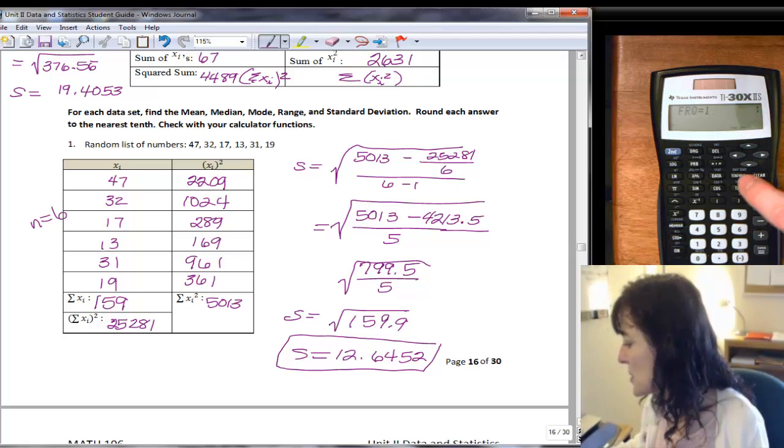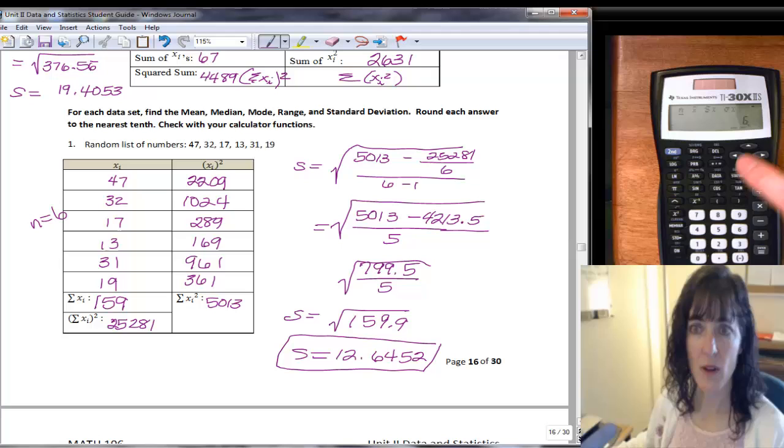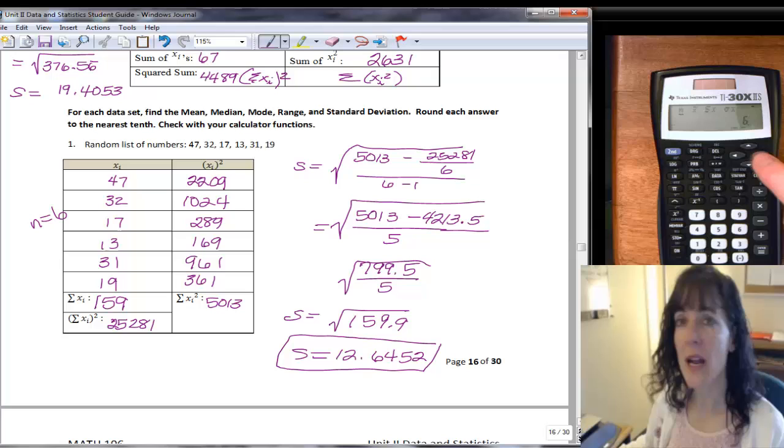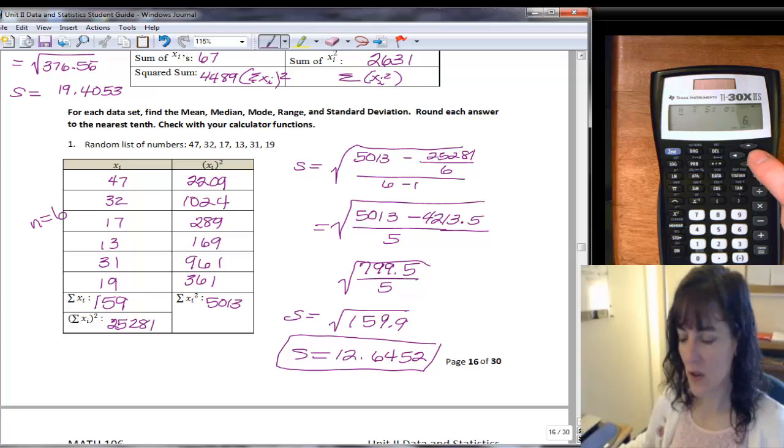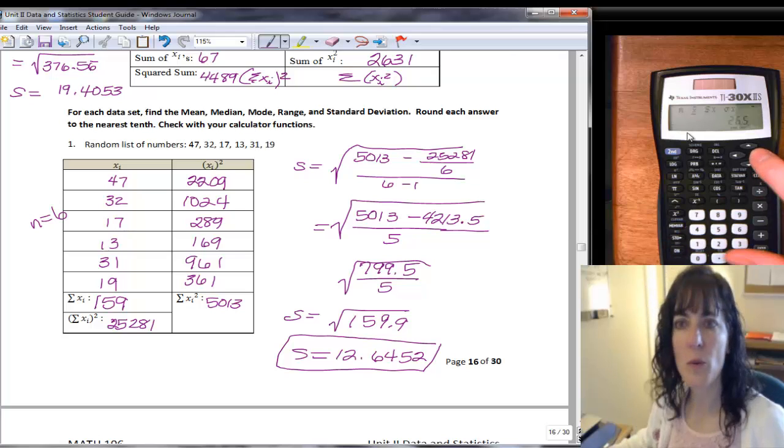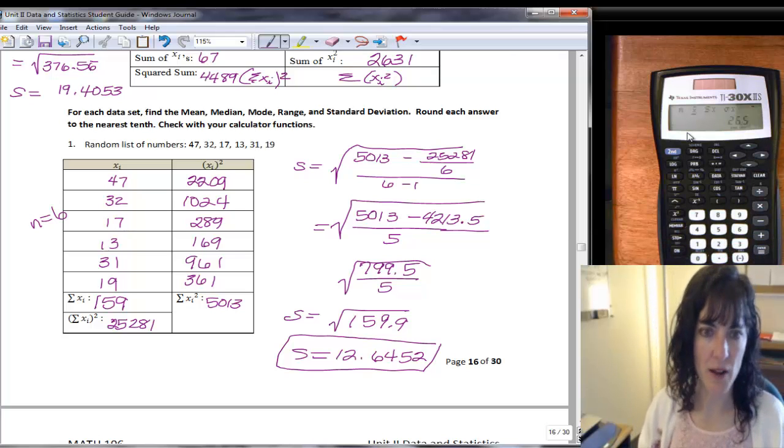So it's going to tell me I have six data items. That's perfect, because that's what I entered, and I can use my right. Do you see on the display there? It has the x bar right there. That's our mean, remember? And then this is our standard deviation that we're using for this class. So we'll go over 1. There's the mean, 26.5.